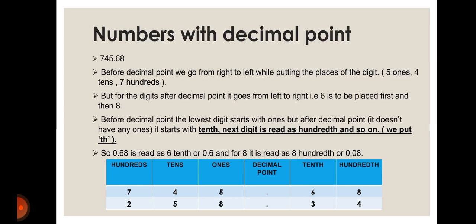In the table for 745.68: five is in ones, four in tens, seven in hundreds, six in the tenths position, and eight in hundredths. So 0.68 is read as six tenths (0.6) and eight hundredths (0.08). In the next example, 258.34: three is in the tenths position (written as 0.3 or three tenths), and four is in hundredths (0.04 or four hundredths).